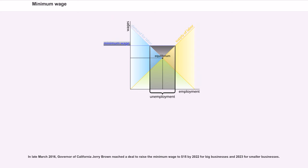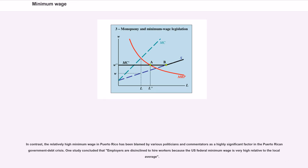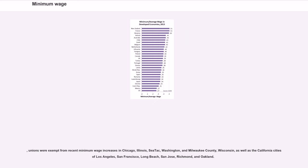In late March 2016, Governor of California Jerry Brown reached a deal to raise the minimum wage to $15 by 2022 for big businesses and 2023 for smaller businesses. In contrast, the relatively high minimum wage in Puerto Rico has been blamed by various politicians and commentators as a highly significant factor in the Puerto Rican government debt crisis. One study concluded that employers are disinclined to hire workers because the U.S. federal minimum wage is very high relative to the local average. Unions were exempt from recent minimum wage increases in Chicago, Illinois, Sea-Tac Washington, and Milwaukee County, Wisconsin, as well as the California cities of Los Angeles, San Francisco, Long Beach, San Jose, Richmond, and Oakland.